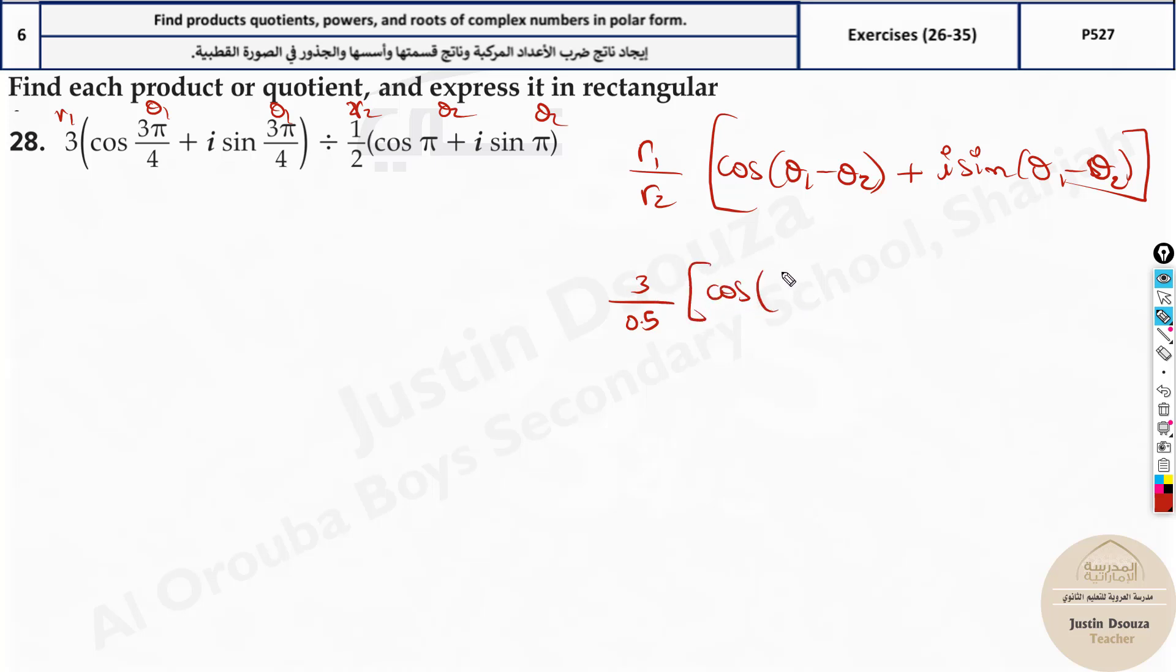What about cos θ₁? It's 3π/4 plus, sorry, it's not plus, it's minus, my bad, minus π. Plus i sine same thing, 3π/4 minus π. And what's happening here? This is 3 divided by 0.5, 6. We have cosine. Now what is 3/4 π minus π? It will be -π/4. Plus i sine again the same thing, -π/4. That's it.